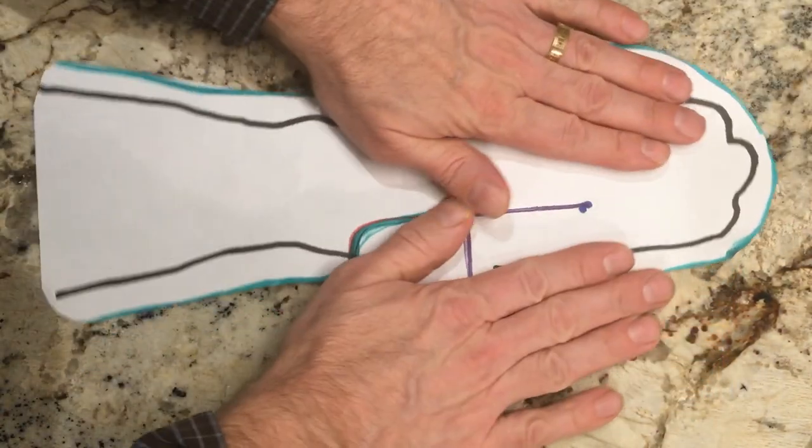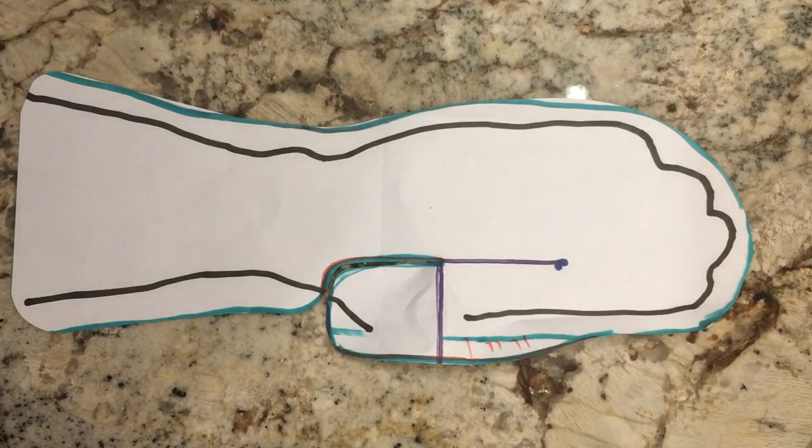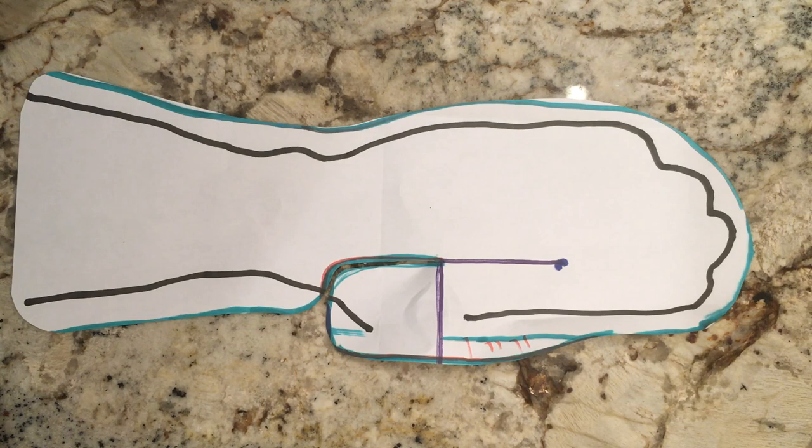So that is the process of making the pattern for your resting pan orthosis, or another name for it is the volar wrist hand orthosis.